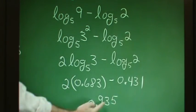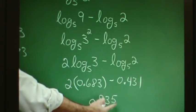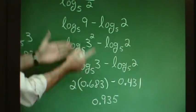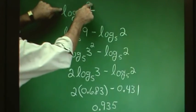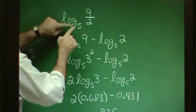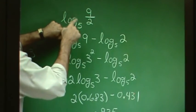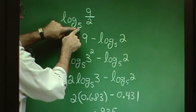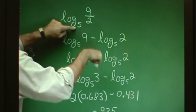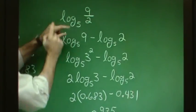Evaluating, we find approximately 0.935. The interpretation is that 0.935 is the exponent on the base 5 that gives 9 halves — that is, 5 to the power 0.935 equals 9 over 2.